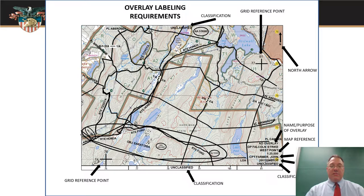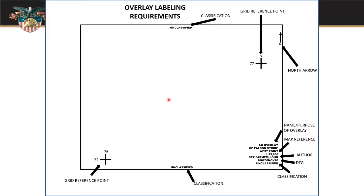Here is a map with an overlay laid over it, with all the appropriate markings. Here is just the overlay material and the things we need to have on every overlay no matter what we're using it for. We always want to have our two crosshairs with our grid line indexes on them, our numbers, to tell us where they go. That's what helps us orient our map. We've got to have our north-seeking arrow. We always want to have classifications top and bottom of the page, and then we need the information block.